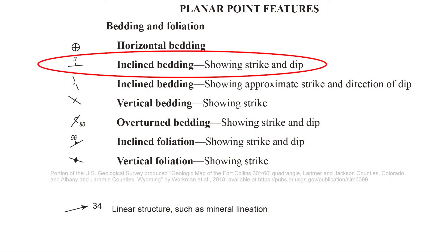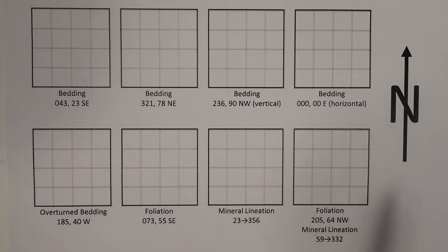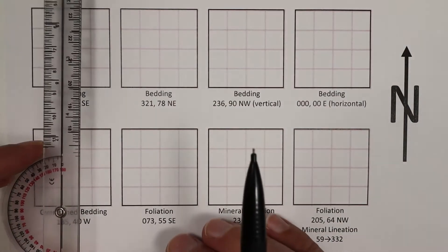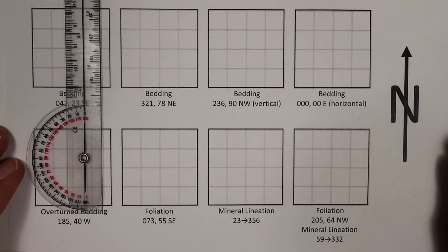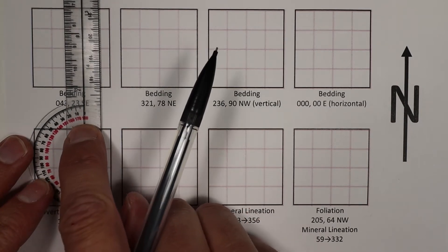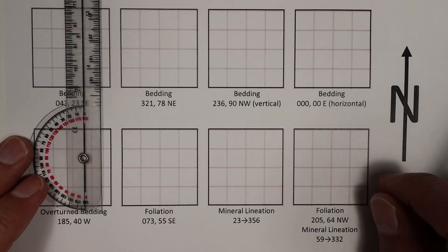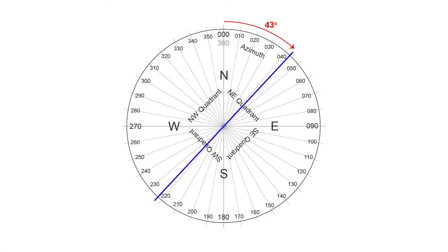The bedding symbol is basically a T symbol. The long line is the strike orientation and the short line indicates the dip direction. We're going to start with a strike of 043. This is an easy one to plot because it's in the northeast quadrant. With any of these measuring devices, it's very important to keep track of where you're going to put zero based on the measurement you're taking and to count up correctly. With a strike of 043, it's just 43 degrees clockwise of due north.